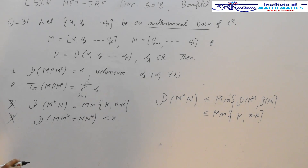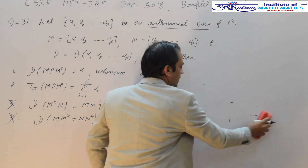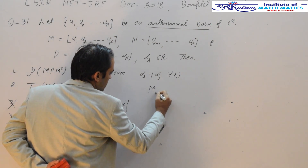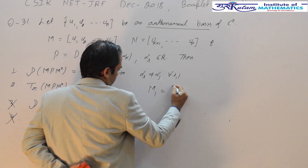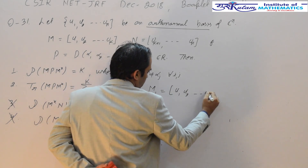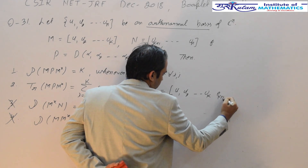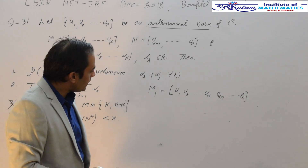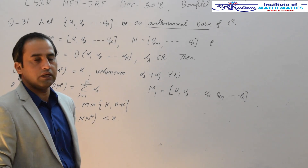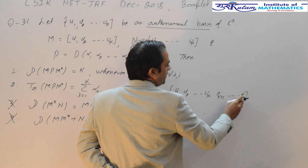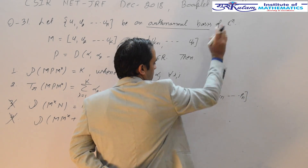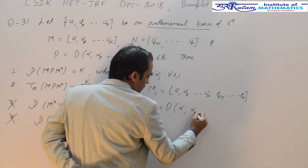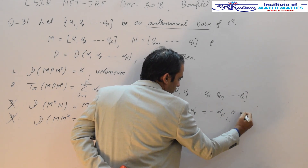Now come to the first or second option. Essentially, the first or second option is based on the similarity of matrices. Let's redefine another matrix M1 which has columns U1, U2, ..., UK, and then e_{K+1} through e_N, where e_i are the standard unit vectors — the standard basis of C^N — with 1 in the i-th position and 0 elsewhere. Also define a matrix P1 which is diagonal with entries alpha 1, alpha 2, ..., alpha K, and then zeros.